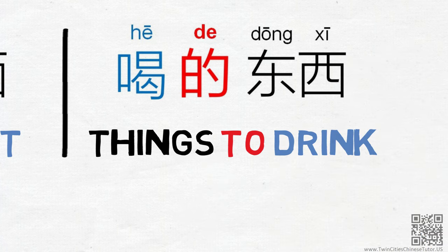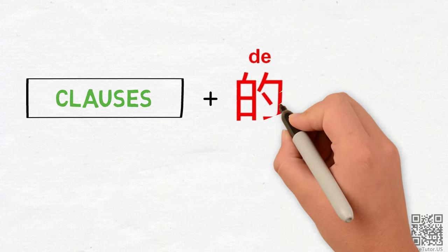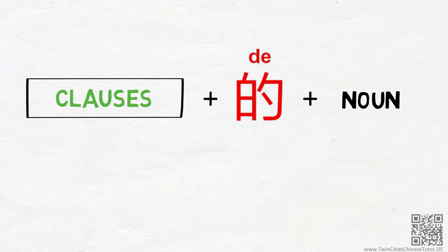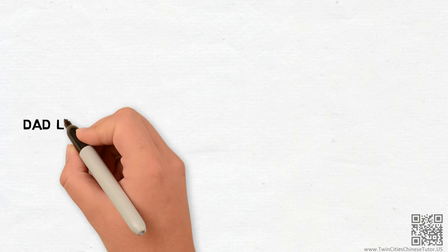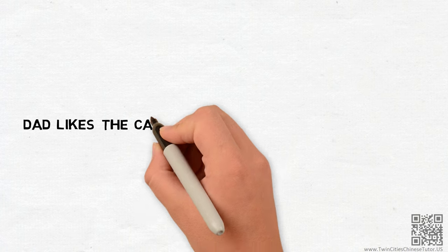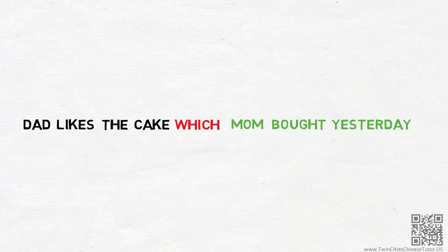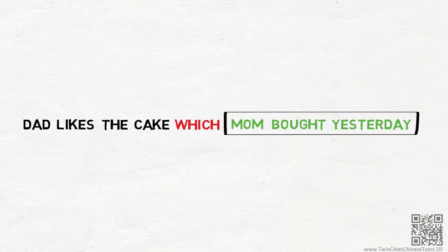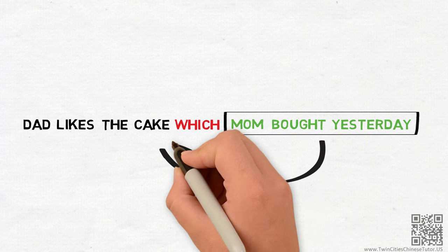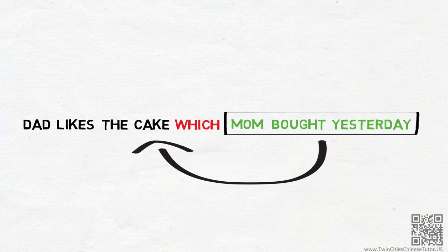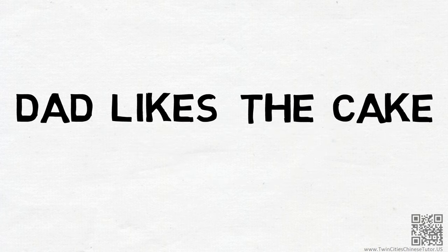Now, things get a bit complicated when we use a clause as a description for nouns. Let's first think about an English example. In English, you can say things like dad likes the cake which mom bought yesterday. In this case, everything after the word which is a clause that is used to describe the word cake. If you take that part away, the remaining sentence dad likes the cake still makes grammatical sense.